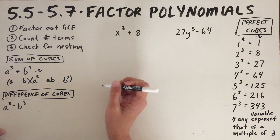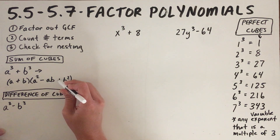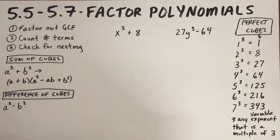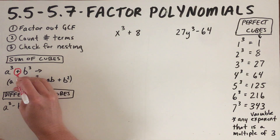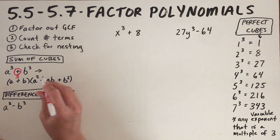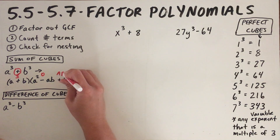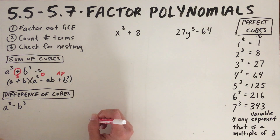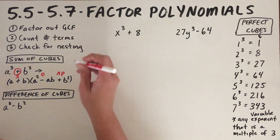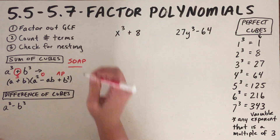The signs follow the acronym SOAP: Same, Opposite, Always Positive. So if we have a sum of cubes — a positive sign — the first sign in the trinomial is the same (positive), the second sign is opposite (negative), and the last sign is always positive. The acronym for this is SOAP. When we're doing sum and difference of cubes, we want to remember SOAP.